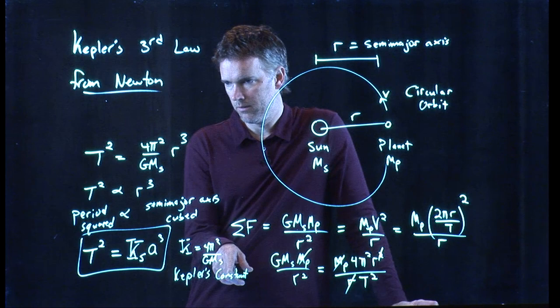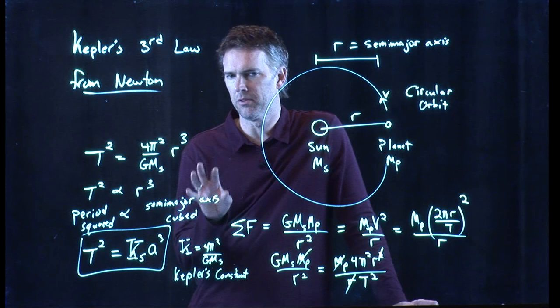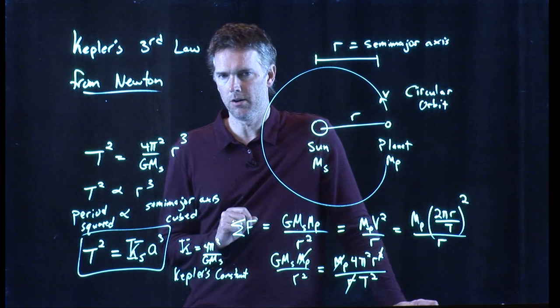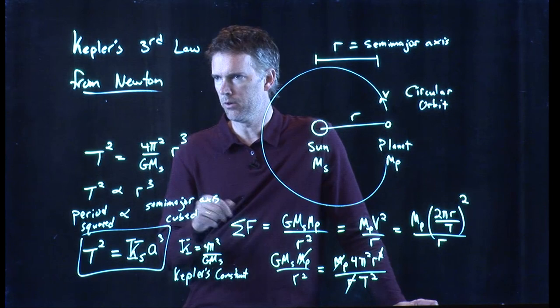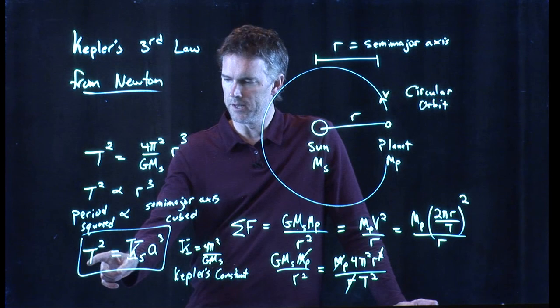We know the mass of the sun. We know big g. We obviously know 4 and pi. And so we can write down a specific value for Kepler's constant. And it applies to everything in our solar system. Not only the Earth, but Mercury and Venus and Mars and Jupiter and so forth. All of those are going to obey a similar equation with a different period and a different semi-major axis.